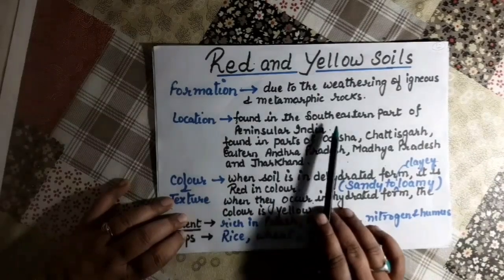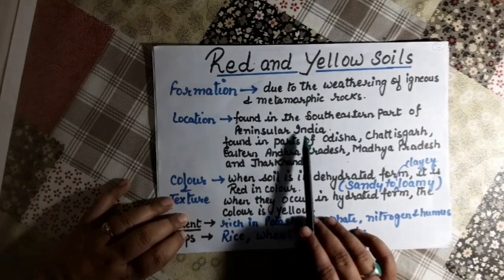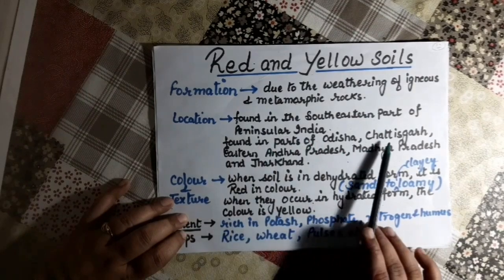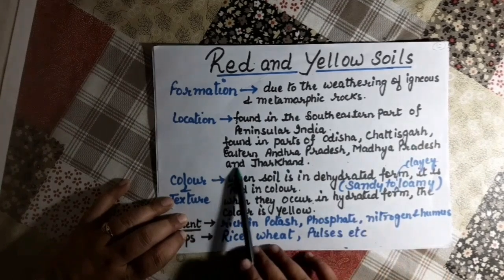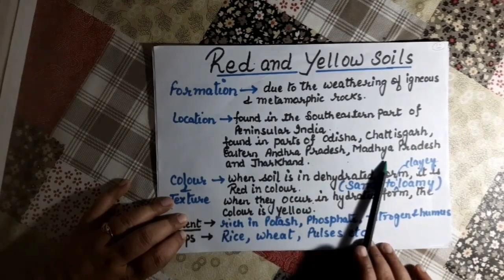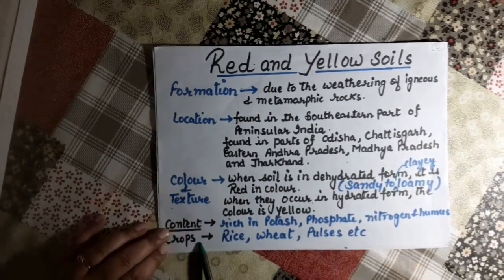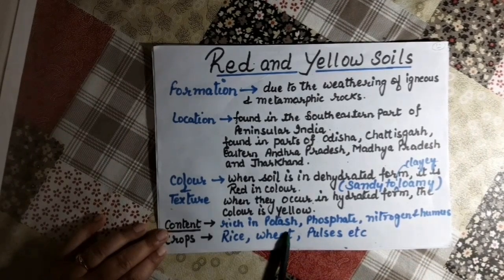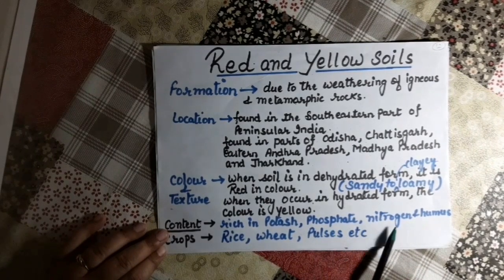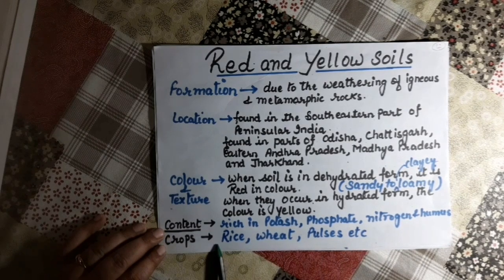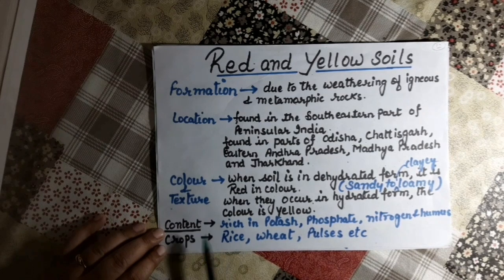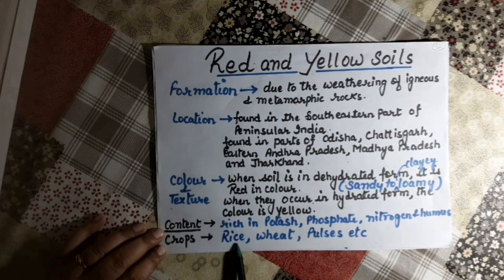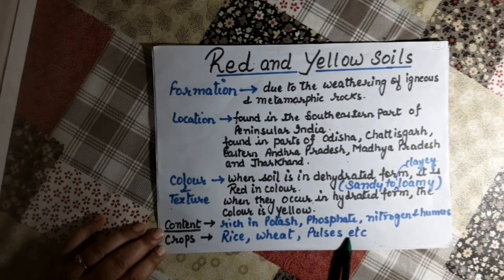Red and yellow soil is found in the southeastern part of peninsular India — in parts of Odisha, Chhattisgarh, eastern Andhra Pradesh, Madhya Pradesh, and Jharkhand. Content: it is rich in potash and phosphate, but poor in nitrogen and humus. Crops that can be grown include rice, wheat, pulses, etc.